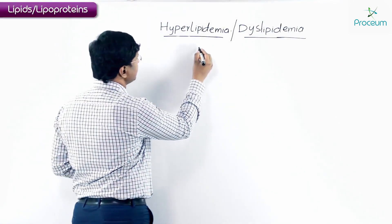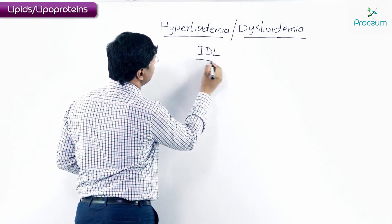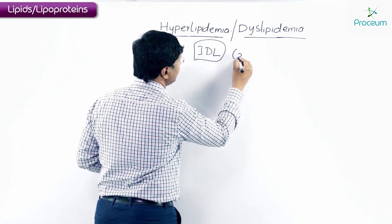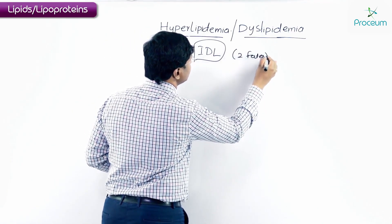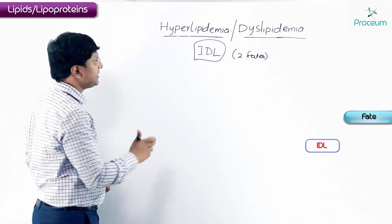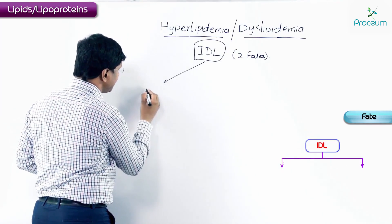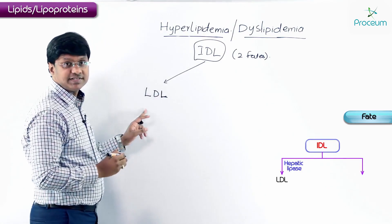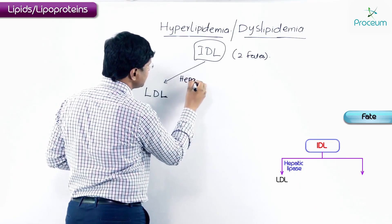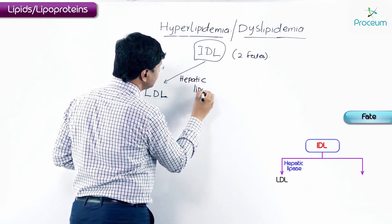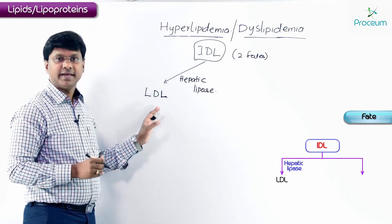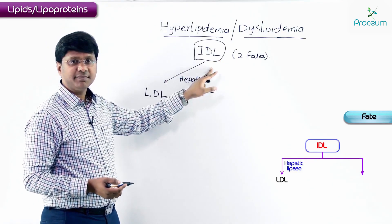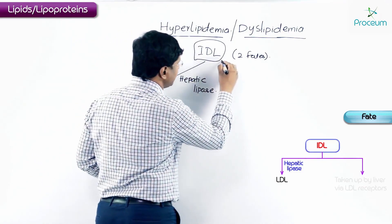The intermediate density lipoprotein (IDL) has two pathways. It is either converted into low-density lipoprotein (LDL) by the enzyme hepatic lipase, or this intermediate density lipoprotein is taken up by the liver.